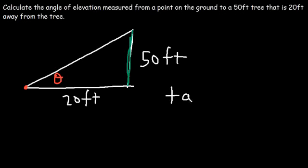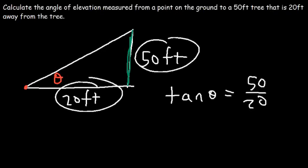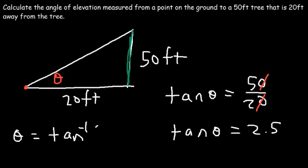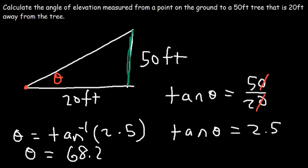We use the tangent ratio again. Tangent theta equals 50 divided by 20 (opposite over adjacent). 50 over 20 simplifies to 5 over 2, or 2.5. So tangent theta equals 2.5. To find the angle theta, take the inverse tangent of 2.5. Typing inverse tan 2.5 gives an answer of 68.2 degrees. Whenever you're looking for an angle, use the inverse tan, inverse sine, or inverse cosine function depending on which two sides of the triangle you have.